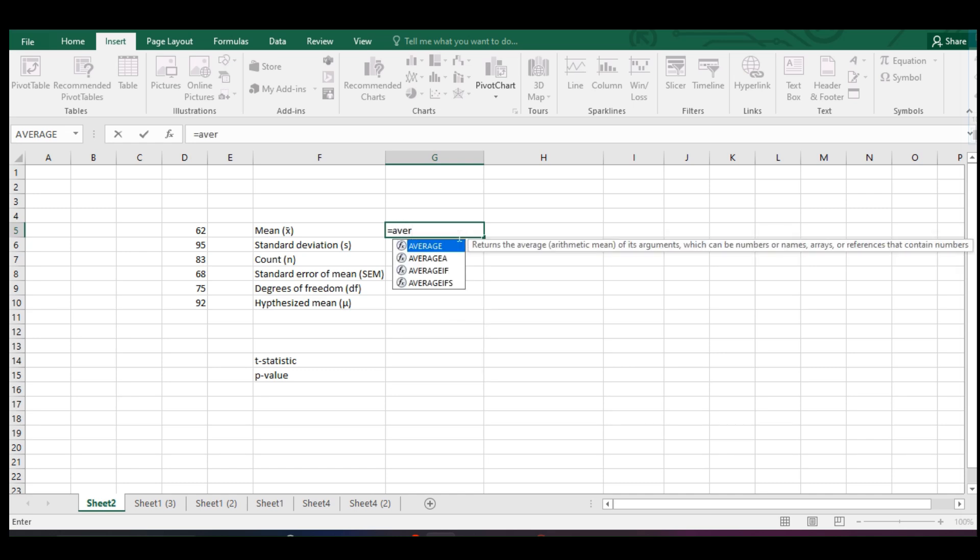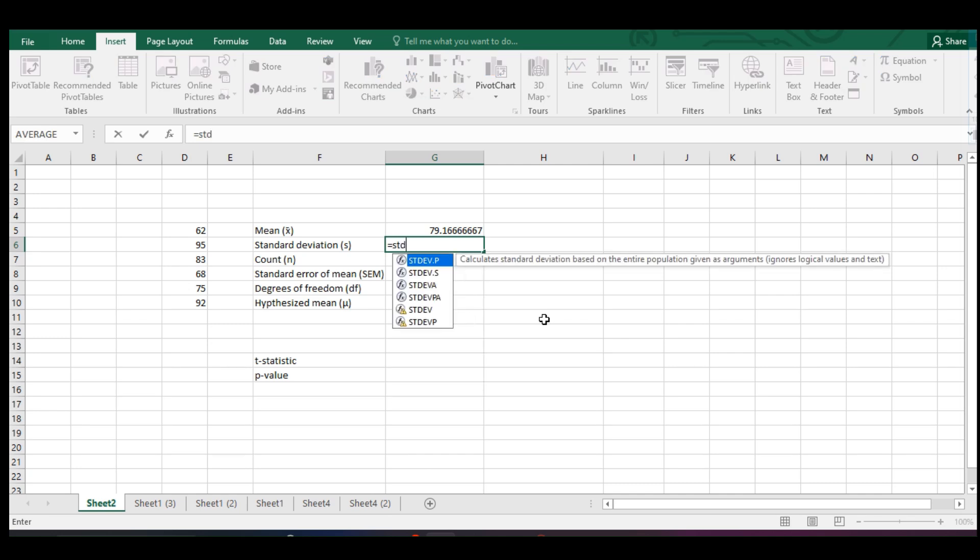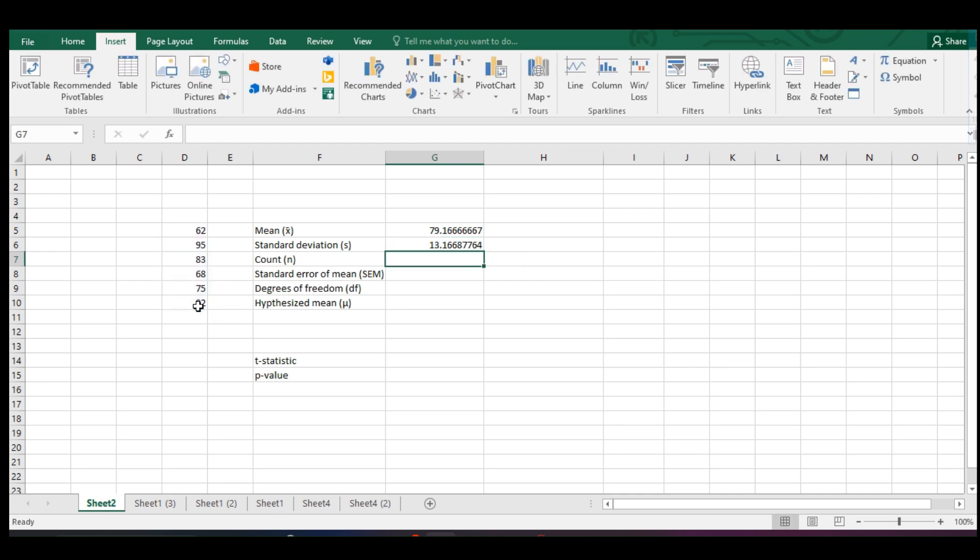So we will start off with getting the mean. To get the mean, we just have to do the average of our data, so from here, and then we close that one. Then we get the standard deviation by having the STDEV.P, and then close.